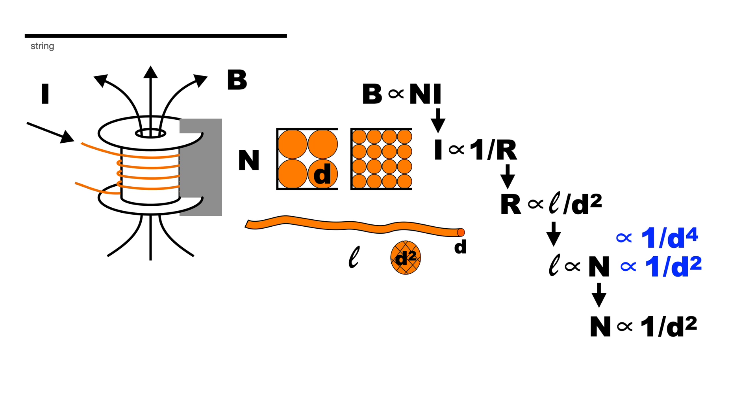Which means the current just goes with D to the fourth. And then up here I already told you that the number of turns is one over D squared and the current is D to the fourth. And so that simplifies to D squared. And so this is kind of the result that I was looking for. That the strength of the magnetic field is proportional to the diameter of the wire squared. And what this kind of says is that in order to get the strongest magnetic field or the strongest coil is that I should just use the thickest wire that I possibly can.